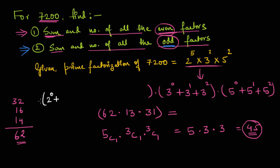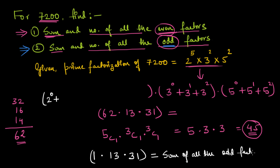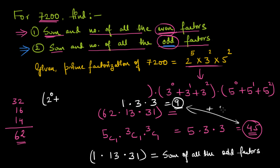I'm left with just 2⁰, which equals 1, multiplied by (3⁰ + 3¹ + 3²) multiplied by (5⁰ + 5¹ + 5²). This gives the sum of all odd factors of 7200: 1 × 13 × 31. For the count: 1 term from the first bracket, times 3 from the second, times 3 from the third = 9. So 7200 has 9 odd factors. Together, 45 even + 9 odd = 54 total factors of 7200.